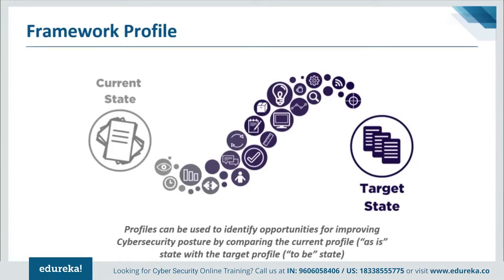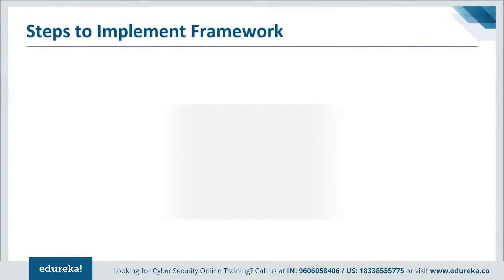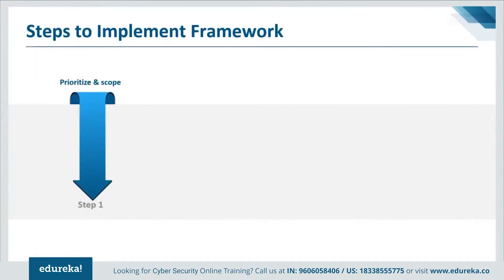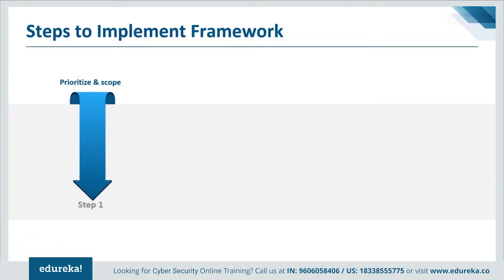The following steps illustrate how an organization could use the framework to create a new cybersecurity program or improve an existing one. These steps should be repeated as necessary to continually improve cybersecurity. Step one is to prioritize and scope: the organization identifies its business mission objectives and high-level organizational priorities, makes strategic decisions regarding cybersecurity implementations, and determines the scope of systems and assets that support the selected business line or process. Risk tolerances may be reflected in a target implementation tier.